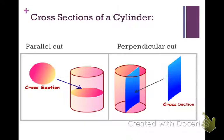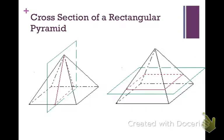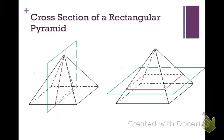Cross sections of a cylinder: if it is horizontal, the cross section is a circle; if it is vertical, the cross section is a rectangle. For a rectangular pyramid, a cross section that is vertical or perpendicular would make a triangle. And the cross section when it is horizontal or parallel to the base is the shape of the base — a square or rectangle, depending on the pyramid.